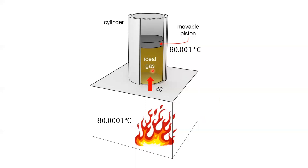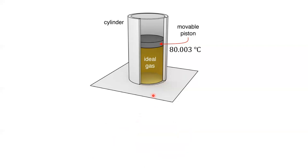That is not a violation of the second law — so in that sense, it could go either way, meaning it was reversible. You just continue that process: bring in a new reservoir at the next incremental temperature, allow DQ to move to the gas which bumps its temperature up to the next increment, take away the reservoir. You would continue that process until you achieve whatever final temperature you'd like.